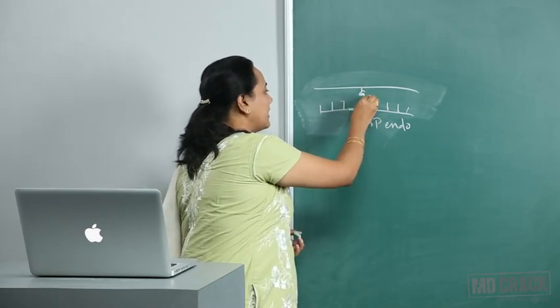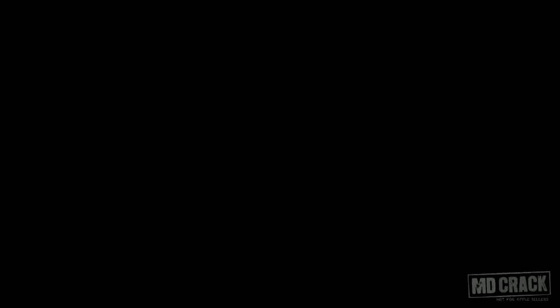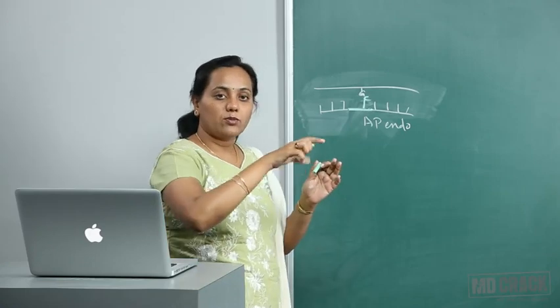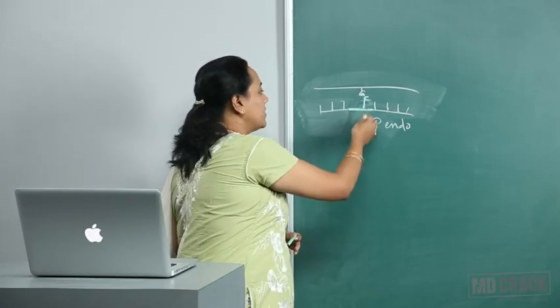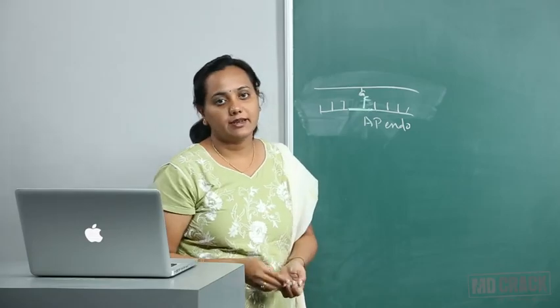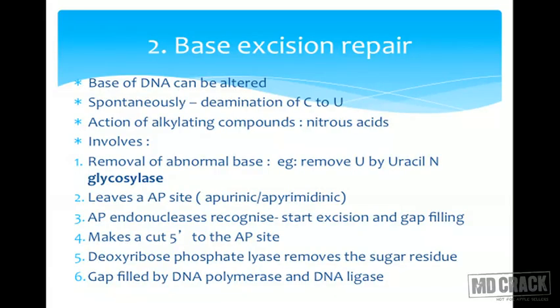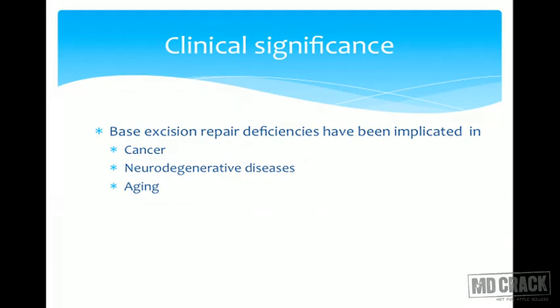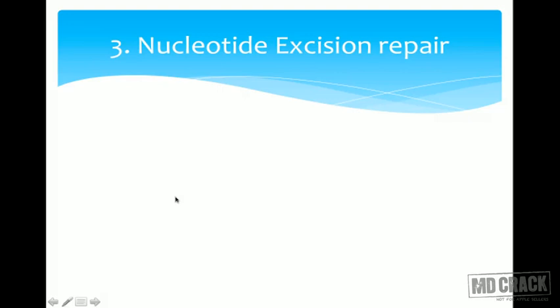In base excision repair, initially only one cut is made, the sugar phosphate is removed, and DNA polymerase and DNA ligase add the correct base and seal the nick. The clinical significance: base excision repair deficiencies have been implicated in cancer, neurodegenerative diseases, and aging.